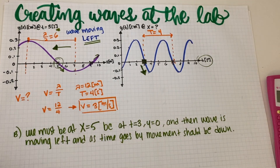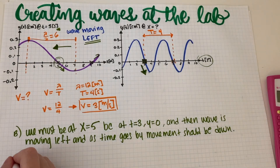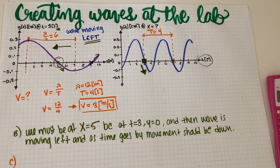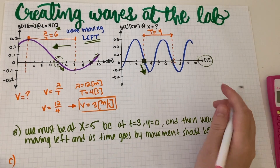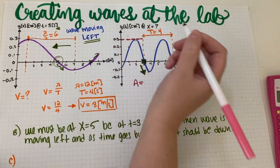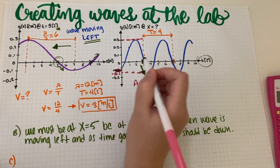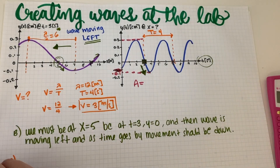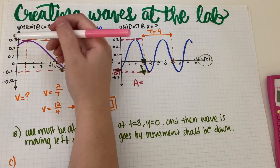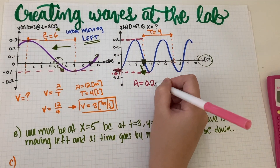Now for Part C, they want the equation. Let's find all the parameters. The amplitude: grab the max and — there should be a 0.1 I copied wrong — the max is 0.3 and the min is 0.1, so the range is 0.4 divided by 2, giving an amplitude of 0.2 centimeters. The vertical displacement y-naught is maximum minus amplitude: 0.3 minus 0.2 equals 0.1, meaning the wave is shifted 0.1 upward. We already have lambda equals 12 meters and period T equals 4 seconds.